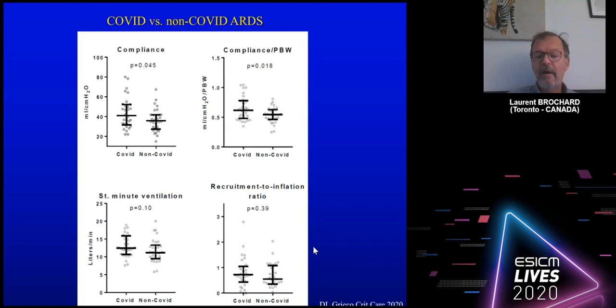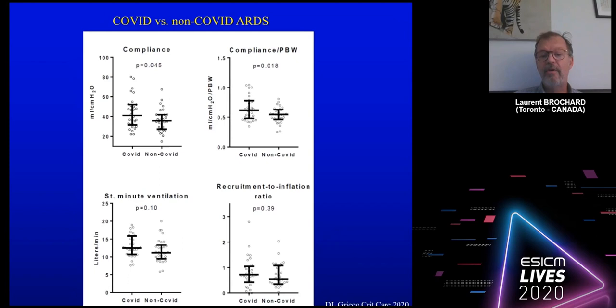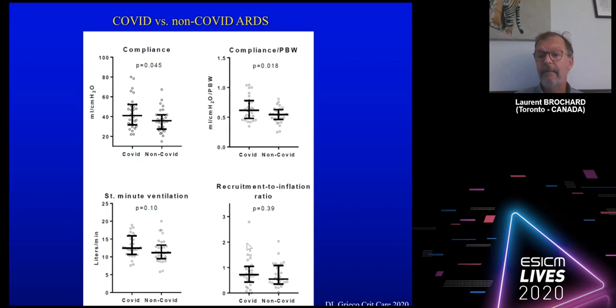But the important point is to look at the distribution of recruitment-to-inflation ratio values: some patients were clearly non-recruitable — so it would be risky to use high PEEP in them — some patients were substantially recruitable, and some were extremely recruitable.